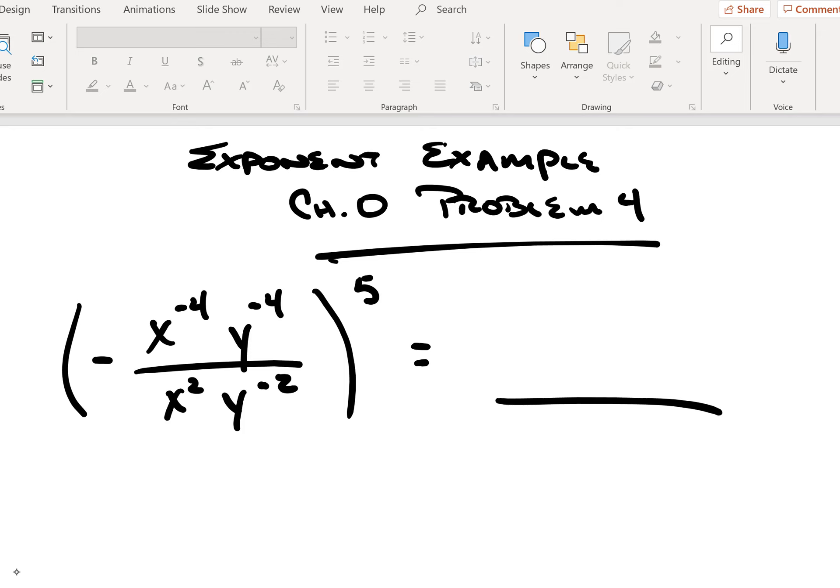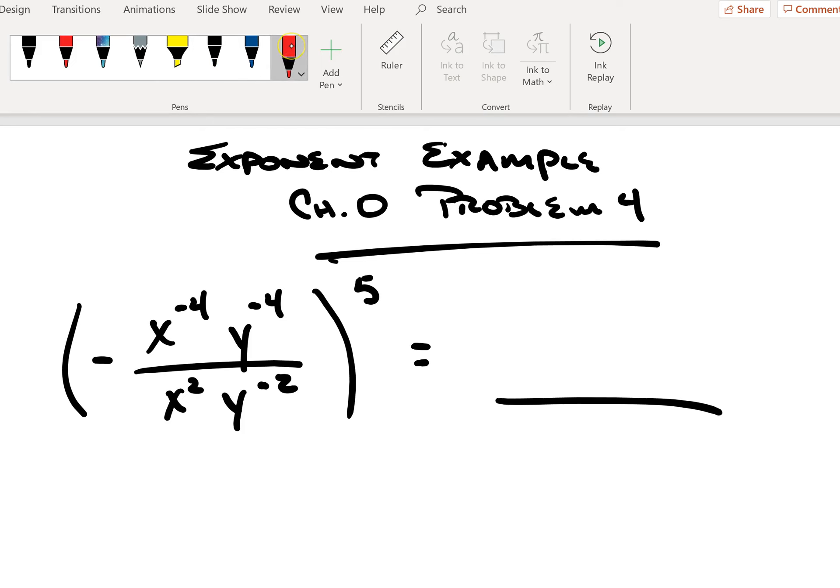And our question here is, what is this going to be when we simplify this out? Now, this one here being to the fifth power makes it a bit tedious to try to expand this out with five copies, rearrange, and keep track of everything. When you end up with that many terms, it becomes very easy to make an arithmetic mistake.